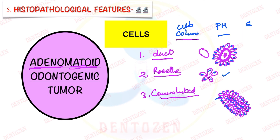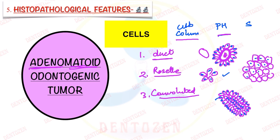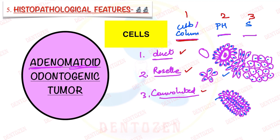Polyhedral cells can be arranged in nests or sheets in different areas. The third cell type is spindle cells, which are present in between the tumor cell-rich areas — filling the spaces between these tumor-rich nodules. So we have three types of cells: cuboidal or columnar cells forming duct-like, rosette, and convoluted patterns; polyhedral cells present in nests; and spindle cells filling the spaces in between.